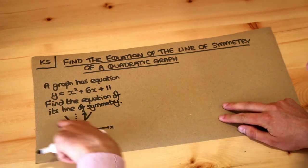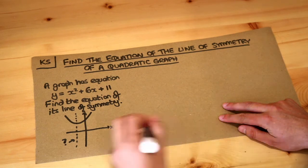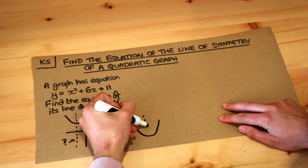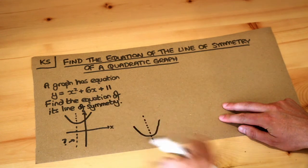And notice that this curve does have a line of symmetry. If I was to draw a curve like this, you can see that it has a line of symmetry going through the middle.